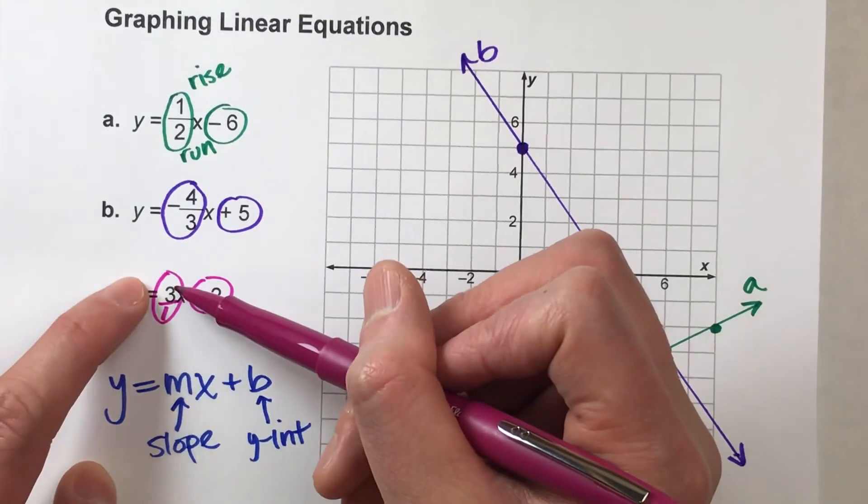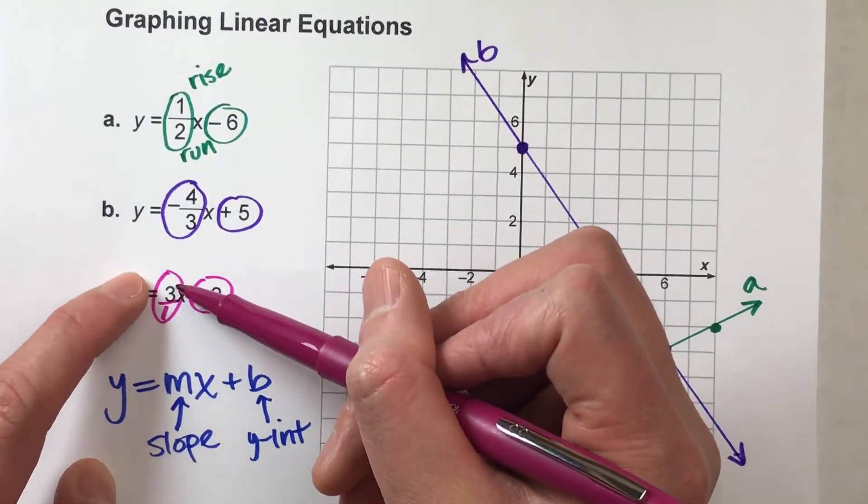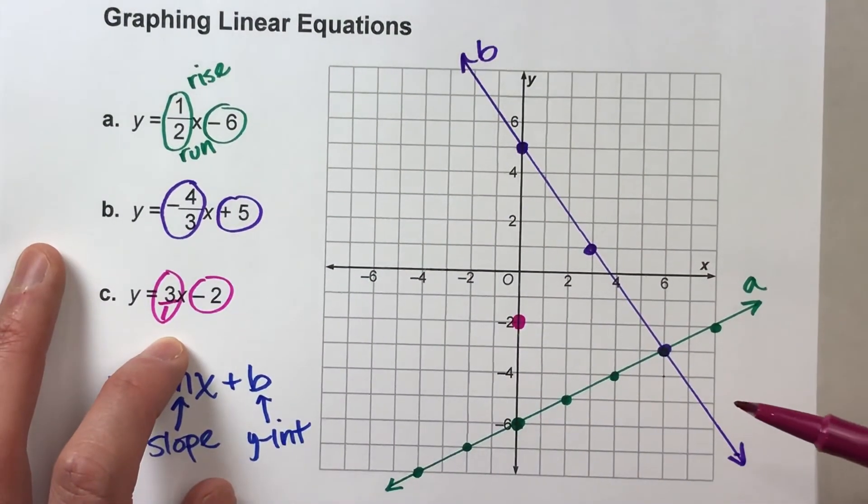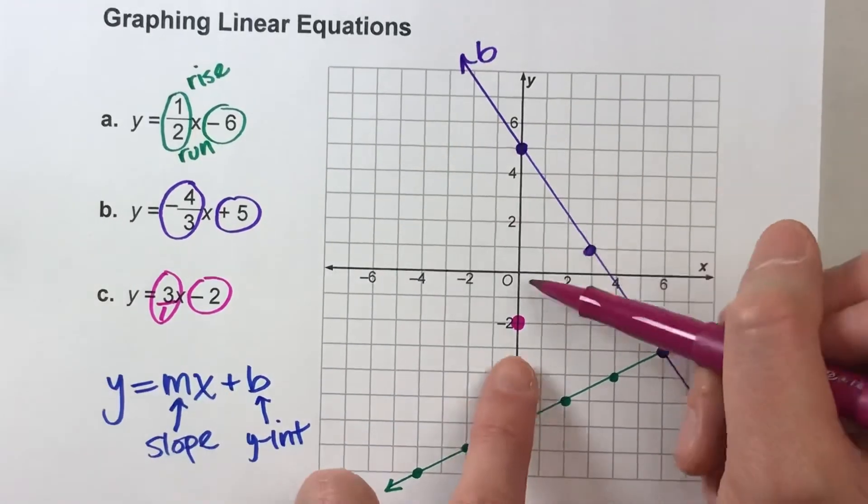That means the pattern of the points is going to go up 3, right 1. Up 3, right 1. If it was just a whole number, you might forget the right 1. A lot of kids do. All right, so from here, I'm going to go up 3.